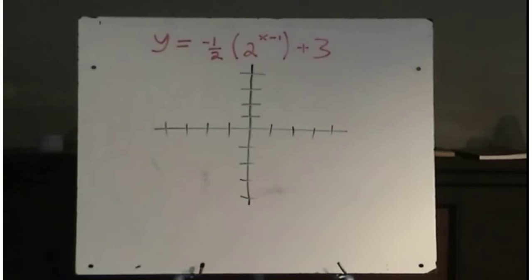Well, now let's consider this function: y equals negative one-half times 2 to the power of x minus 1 plus 3.